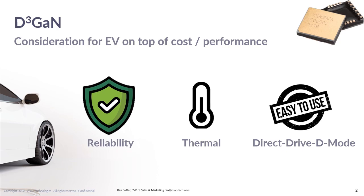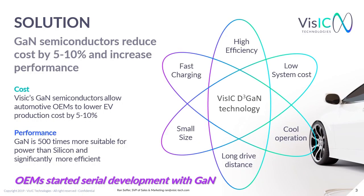Looking at the inverter and charger needs for automotive applications, we developed the direct drive D-mode GaN, which we call D-power-free GaN. It provides the advantages of D-mode reliability with the benefits of an off-state power switch. As GaN can reduce the losses of energy conversion and transformation, it brings value in many aspects to reduce e-car costs — starting from a smaller battery pack required, lowering the e-car weight, and reducing the cooling system costs.